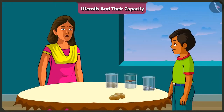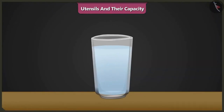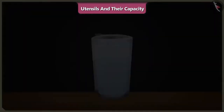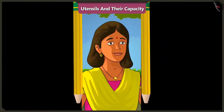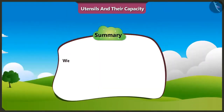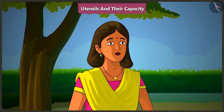Yes, I understood. Mishtu, can you get me a glass of water? But this glass is not full. Look! The glass is full. On adding ice cubes, the glass got filled completely. Friends, today we learnt why a half-filled vessel gets full when we drop objects in it. In the next video, we will understand the patterns of objects around us.